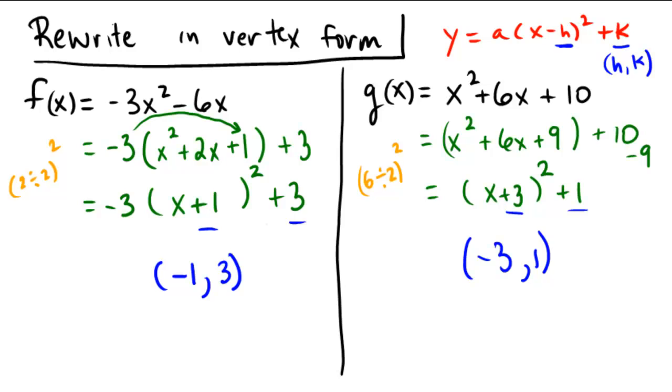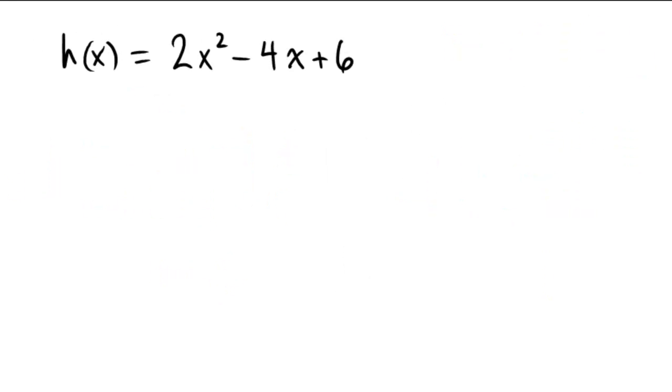Okay, why don't you pause the video and see if you can do one on your own without the guide up there. Try to do 2x squared minus 4x plus 6. Okay, assuming you give it a good old shot here. The coefficient to the x squared term is a 2. So I'm going to pull that out and get 2 times the quantity x squared minus 2x, and then just leave the plus 6 back here.